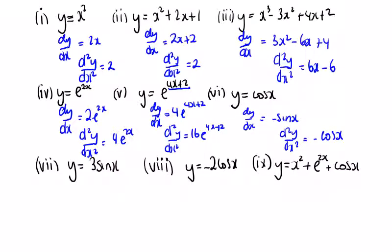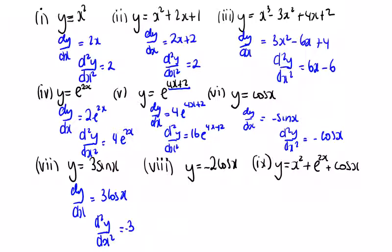So if 3 sin x goes to 3 cos x, dy dx is equal to 3 cos x, and if we differentiate 3 cos x we're going to get minus 3 sin x.